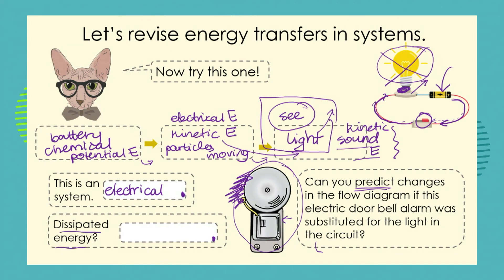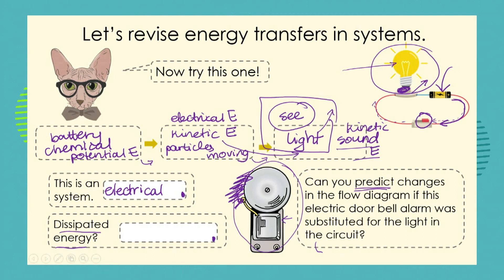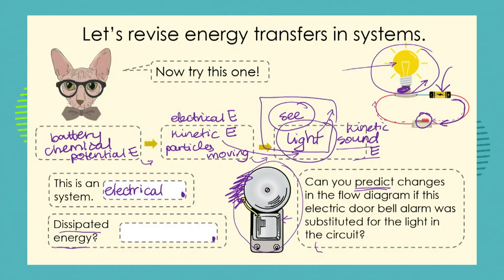Is there any dissipated or wasted energy? When we had our original light bulb system, if you touched the light bulb you would feel that it was very hot. Even if you hold your hand close to the light bulb, you will feel the heat being radiated. So you can see that there is light energy, but there is also dissipated heat energy.